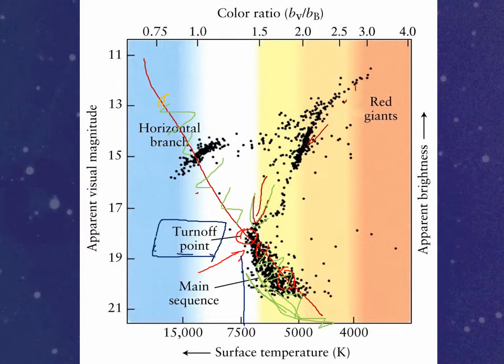If a star that lives for 5 billion years is dying, all stars that live less than 5 billion years are dead, and all stars that live more than 5 billion years are still alive as main sequence stars — that means that star cluster is 5 billion years old. On the other hand, if stars that live longer than 1.5 billion years are still on the main sequence but stars that live less than 1.5 billion years are off it, that means your star cluster is 1.5 billion years old. This is how you judge the age of a star cluster.